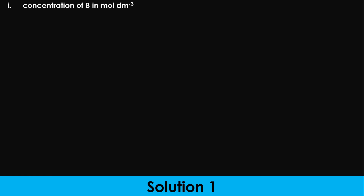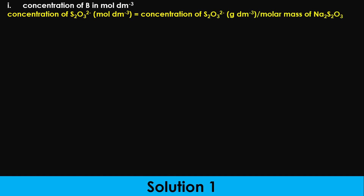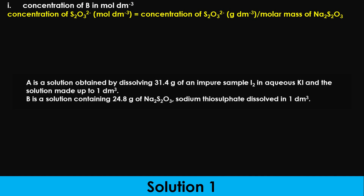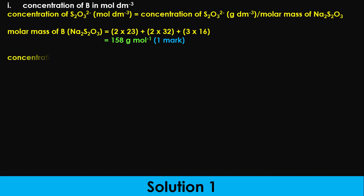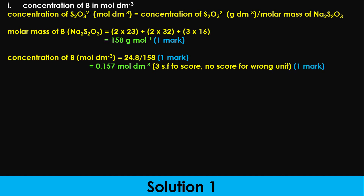Solution. To calculate the concentration of B in moles per dm³, we use the formula connecting concentration in moles per dm³ with concentration in grams per dm³ and molar mass. Concentration of thiosulfate in moles per dm³ equals concentration in grams per dm³ divided by molar mass of sodium thiosulfate. The molar mass of sodium thiosulfate is calculated as shown on the screen, giving 158 grams per mole. Substituting the values, we obtain the concentration of B as 0.157 moles per dm³. Ensure all concentration answers are in three significant figures with appropriate units.